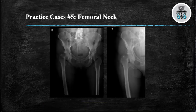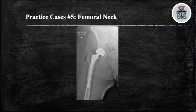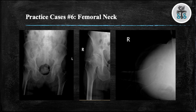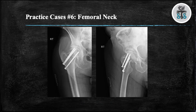Case 5: We have two views, AP pelvis and AP right hip, demonstrating a displaced right femoral neck fracture. This fracture was treated with a right hemiarthroplasty. Case 6: We have three views — AP pelvis, AP right hip, and cross table lateral of the right hip — demonstrating a non-displaced right subcapital femoral neck fracture. This fracture was treated with two fully threaded cannulated Kinschla screws and a single partially threaded cannulated Kinschla lag screw with a washer.